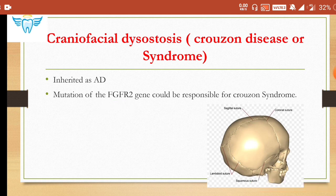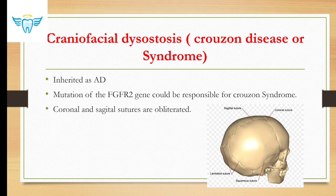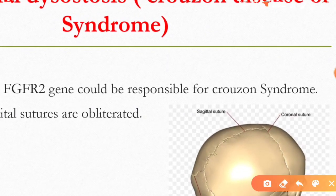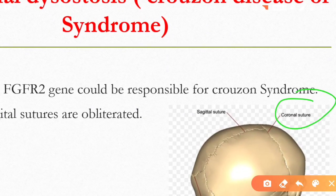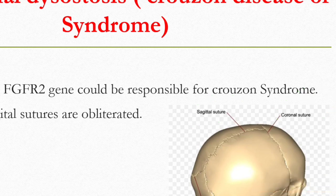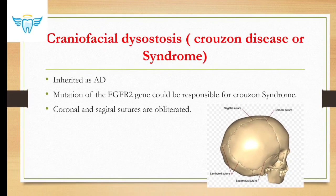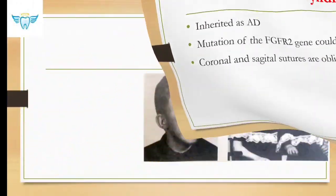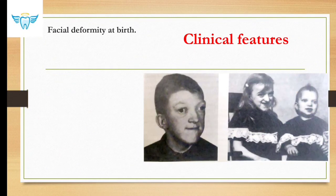In Crouzon syndrome, the coronal and sagittal sutures are obliterated. As you can see in the picture, the coronal suture and the sagittal suture undergo early fusion, which gives rise to Crouzon syndrome. Facial deformities are seen at birth.